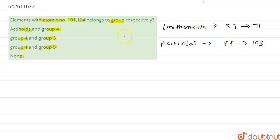So it is clear from here that the element with atomic number 101 belongs to actinoid series.